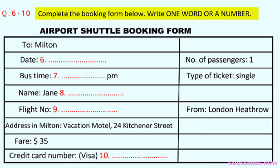Right. Now, do you know where you'll be staying? We need to give the driver an address. Yes, it's called the Vacation Motel, and I think it's near the town centre. The address is 24 Kitchener Street — that's K-I-T-C-H-E-N-E-R Street. That's fine. So that's $35 to pay, please. Have you got your credit card number there? Yes, it's a Visa card, and the number is 3303-8450-2045-6837. Well, that seems to be everything. Have a good trip, and we'll see you in Toronto next week. Yes, bye. Thanks for your help.